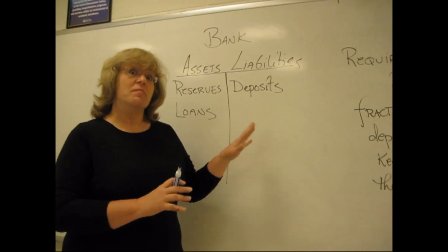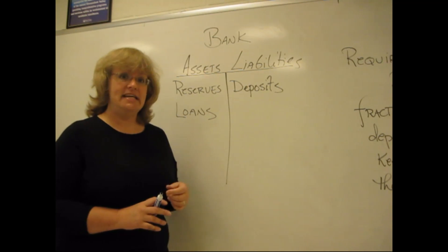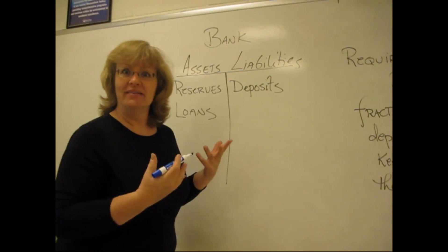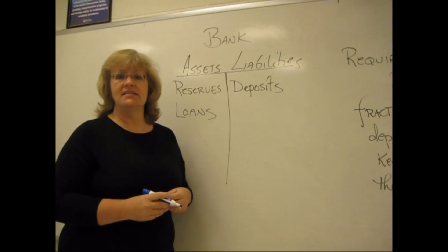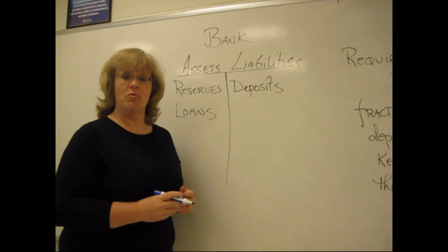I'm going to talk about the building blocks of this first. What I've got on the board here is something called a T-account. There's a big T in the middle here, which is what gives it its name. A T-account is a way to list the assets, liabilities, and net worth, which I'm not worried about for this particular example, for a bank.